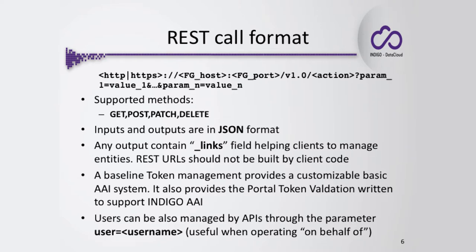This is the classic way to explain a REST call in a generic fashion. We have the protocol name — either HTTP or HTTPS according to the front-end configuration — then the host name and port where the front-end is listening, and then the version of the APIs, in this case version 1.0.